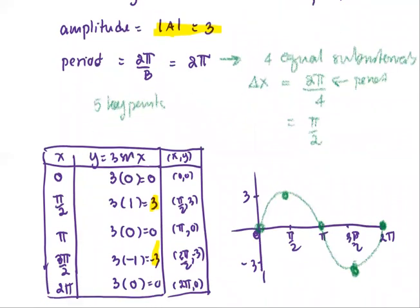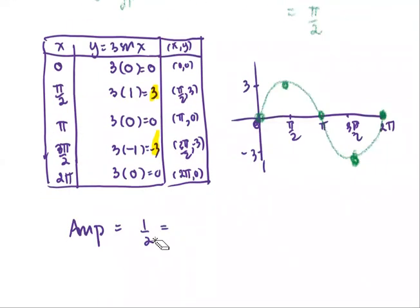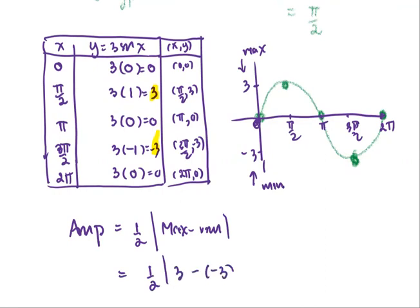Let me clarify this. We know that the maximum is 3 and minimum is negative 3. To compute the amplitude from the graph is 1/2 multiplied by the max minus the minimum value. In our case, the max is 3, minimum is negative 3, therefore we have 1/2 multiplied by 6, or the value 3, which matches with the absolute value of A.